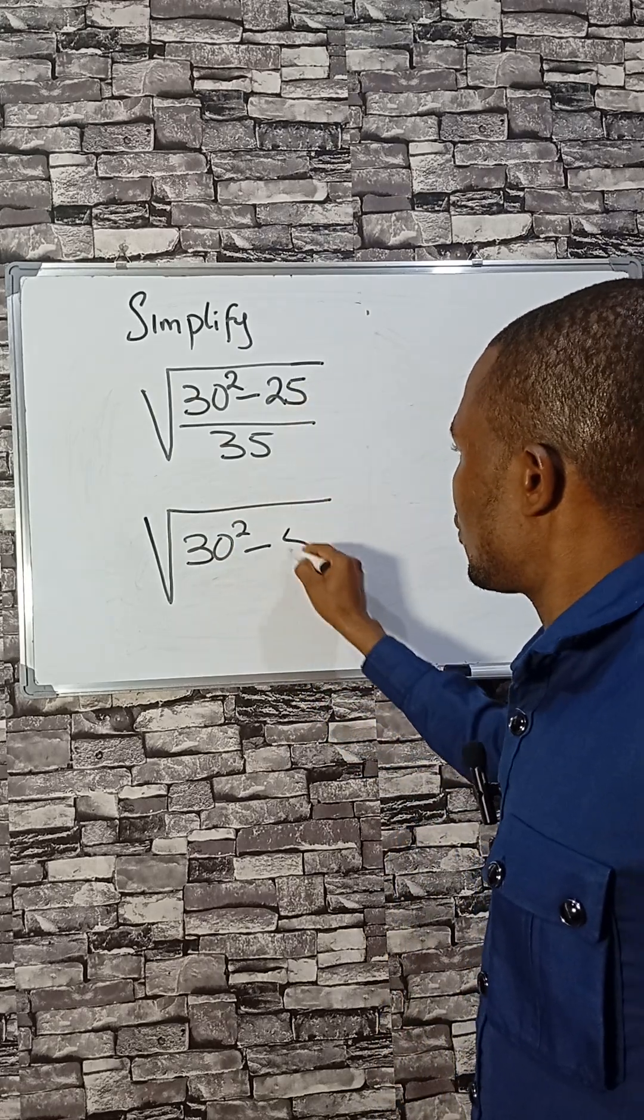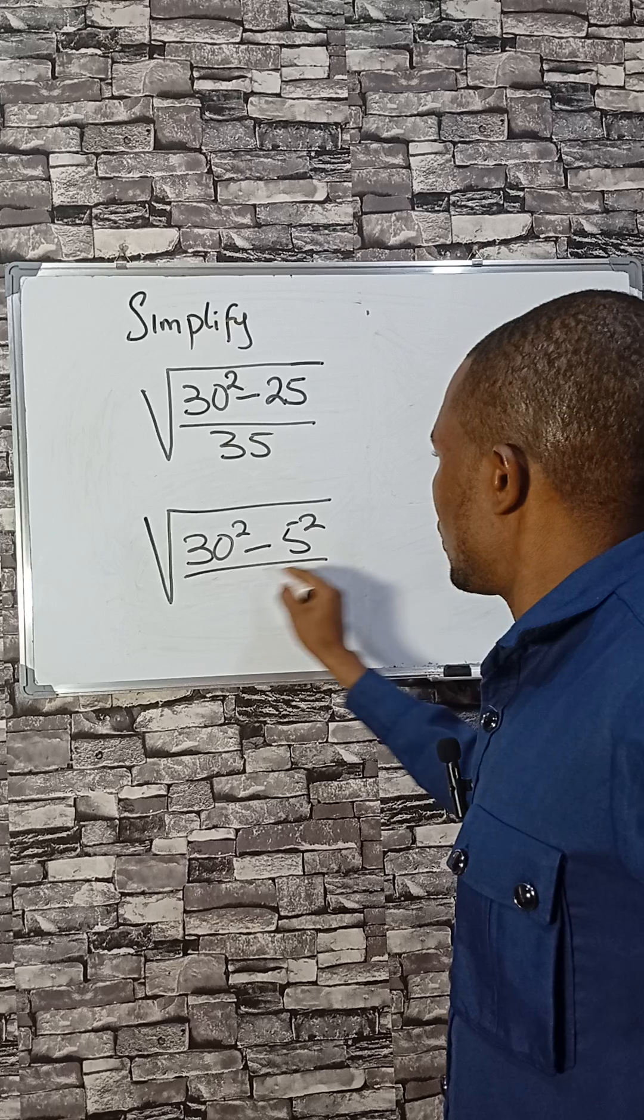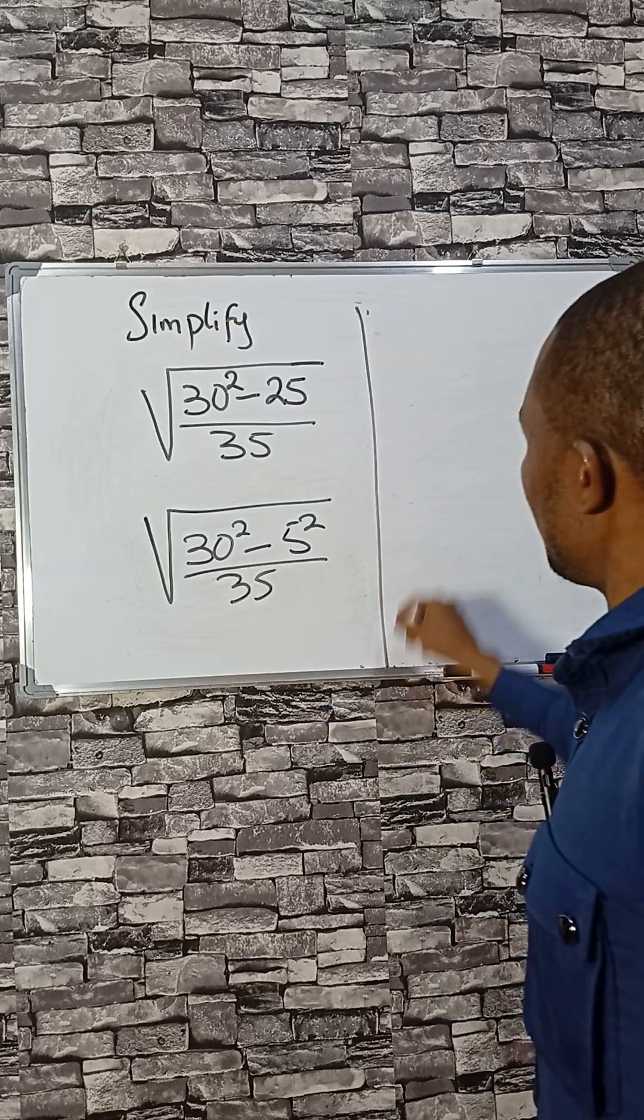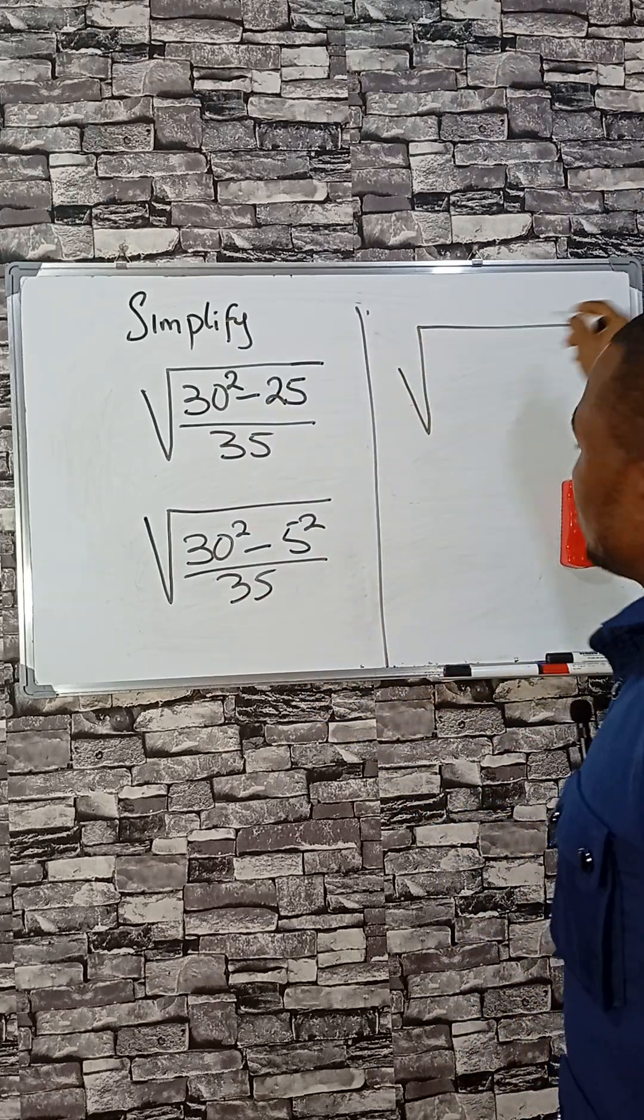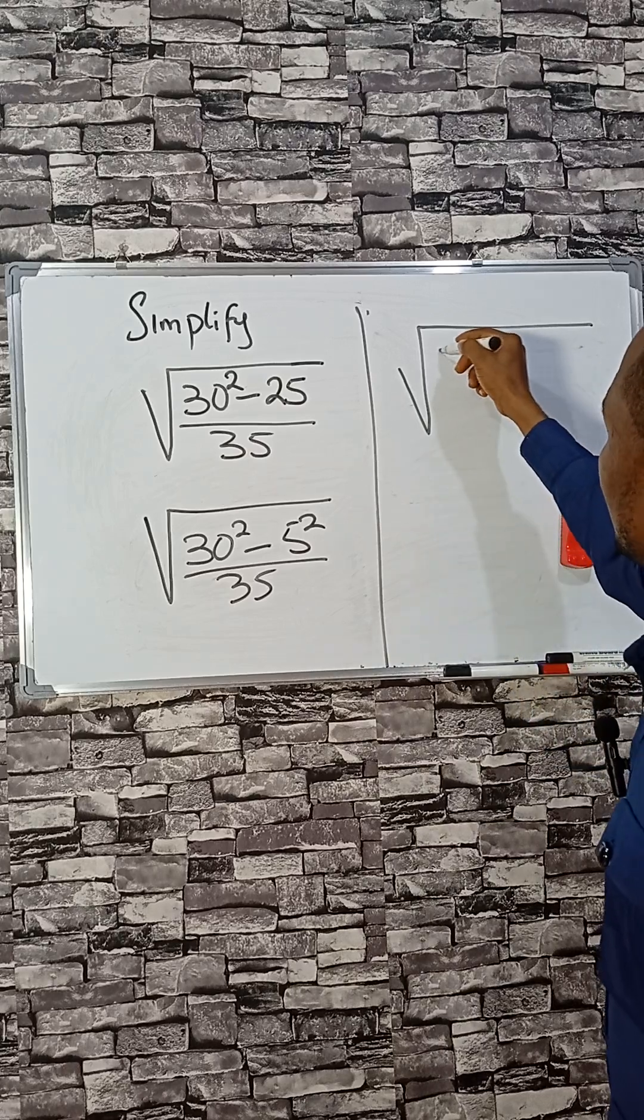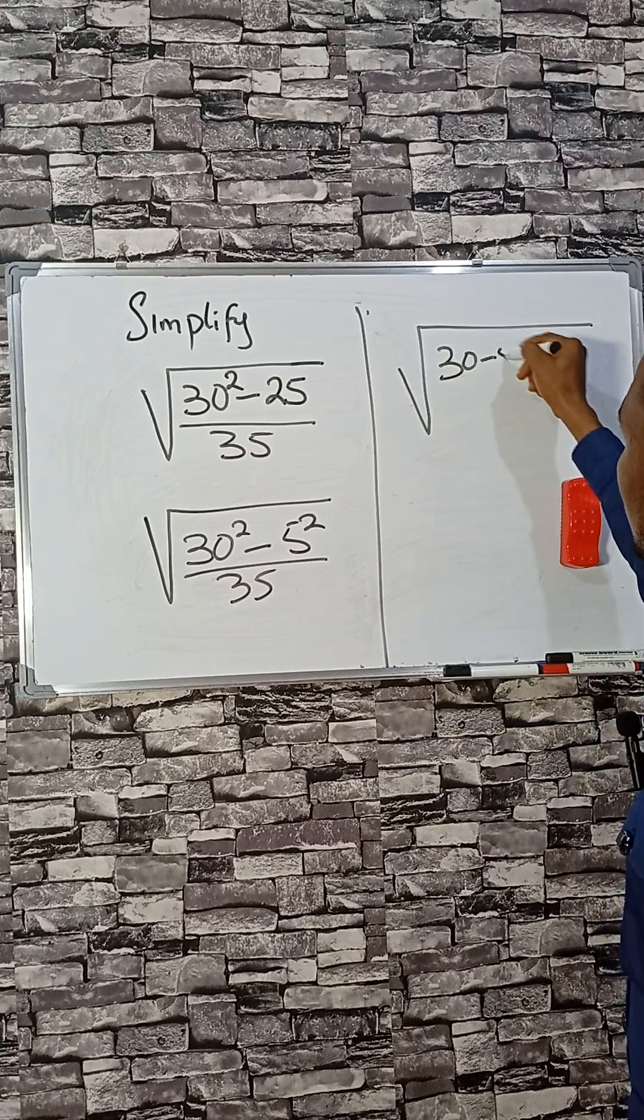25 is 5 squared, divide by 35. The next step is to use difference of two squares, so that's 30 minus 5.